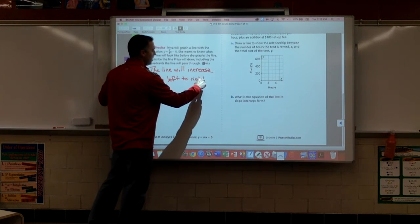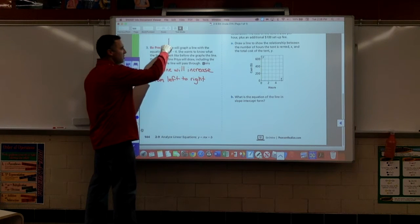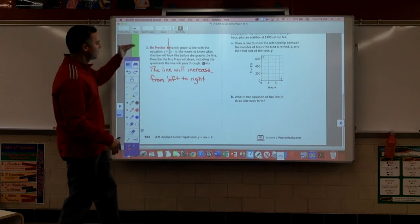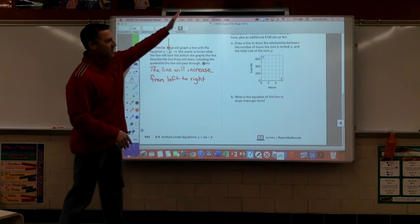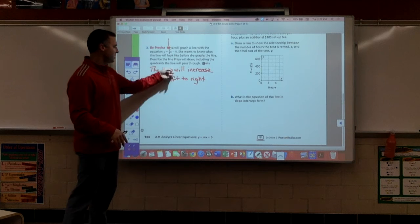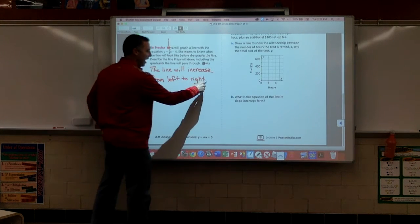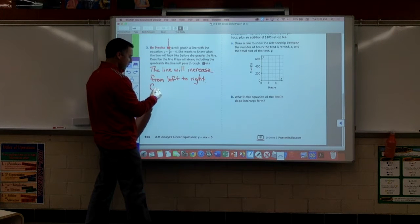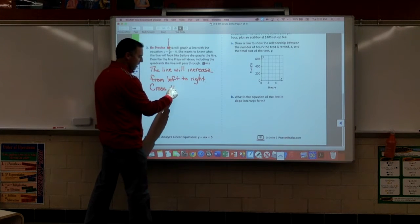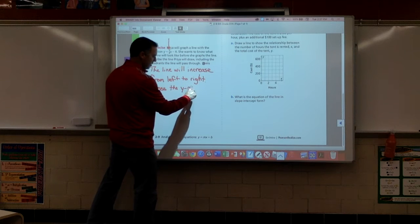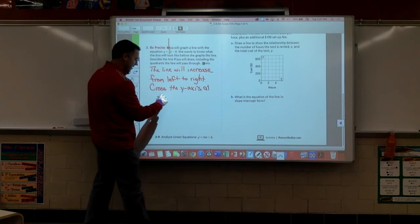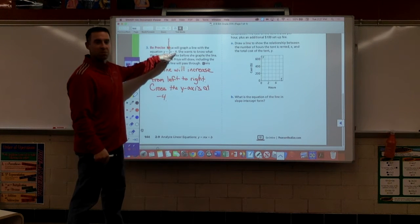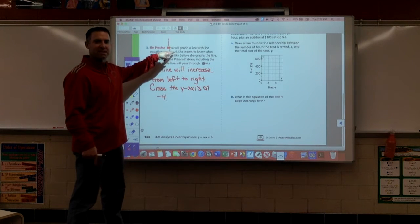Think about what kind of slope it has. It's a positive slope. It's a slope of three-fourths, which means it's going to rise three and run four. It's going up from left to right. It's increasing from left to right. I also know it's going to start where? Negative four. Or cross the y-axis at negative four. There's my minus four. It's crossing the y-axis at negative four.